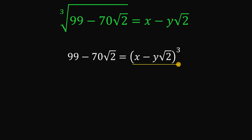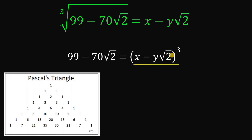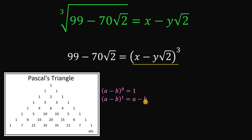For the right-hand side, we will use Pascal's triangle to expand (x minus y times square root of 2) raised to the power of 3. Using Pascal's triangle: the first row gives 1; the second row gives the coefficients for (a minus b)¹ as 1 and 1; and for (a minus b)² we get a squared minus 2ab plus b squared, with coefficients 1, 2, 1. When we have (a minus b), the sign alternates.